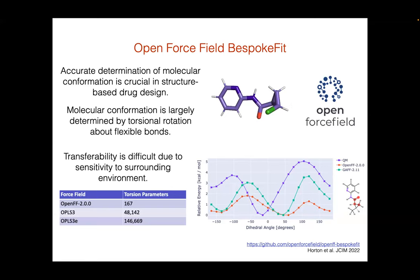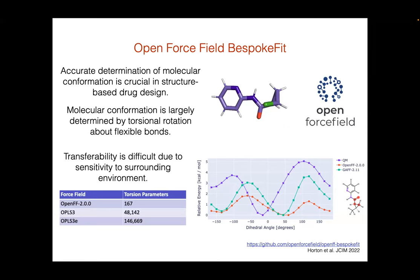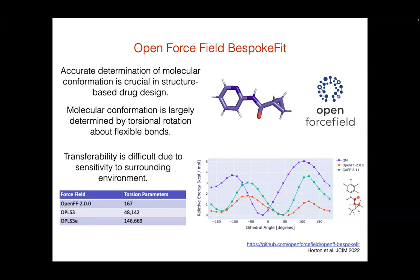What tends to happen with force field design, as we see for the Open LS3 versions here, is that the torsion parameter library can sort of explode as you try to describe more and more of chemical space. Whereas due to clever chemical perception, the Open Forcefield library is much smaller — but that can still lead to deficiencies in the description of torsional scans. We have a QM plot of a torsion scan for a molecule in blue, and doing the same scan with either Open Forcefield or GAFF gives both the wrong minimum position and the wrong relative energies of neighbouring minima.